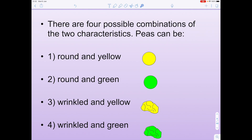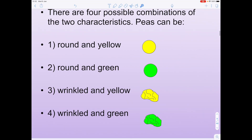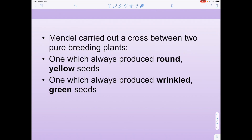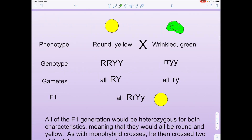Mendel carried out a cross between two pure breeding plants. Pure breeding means that these plants are homozygous — they have two of the same allele. The two pure breeding plants he crossed were round yellow seeds and wrinkled green seeds. Let's have a look at that first cross.